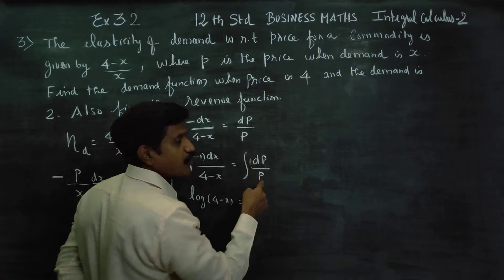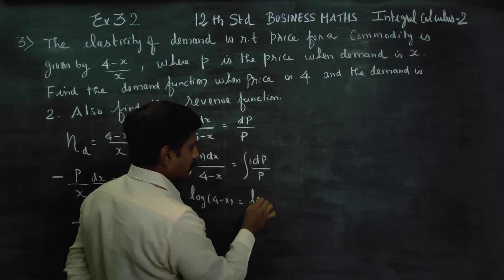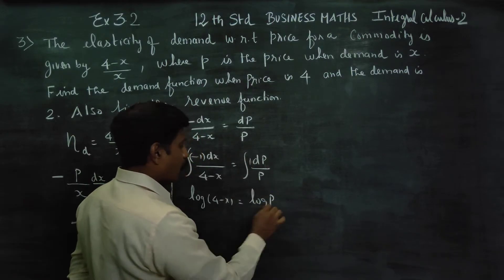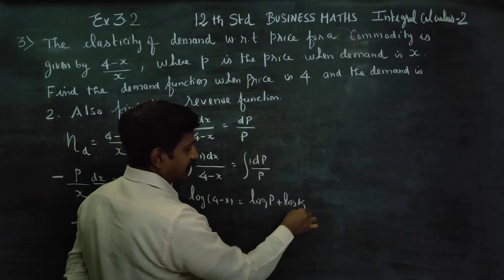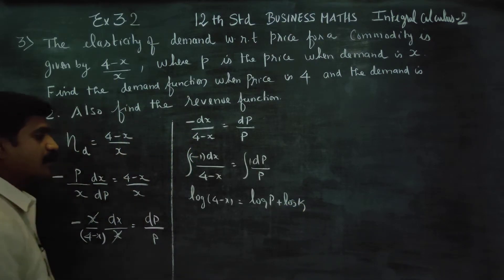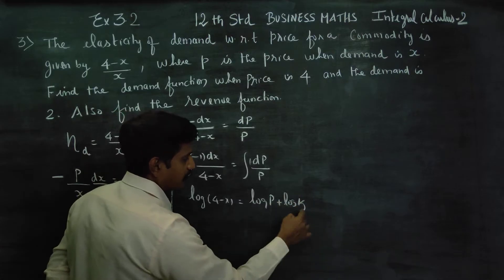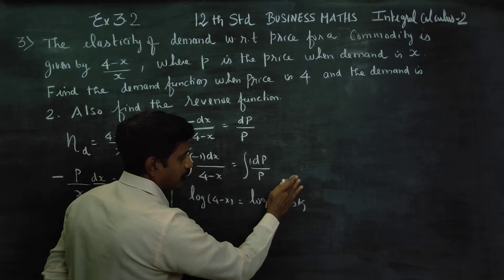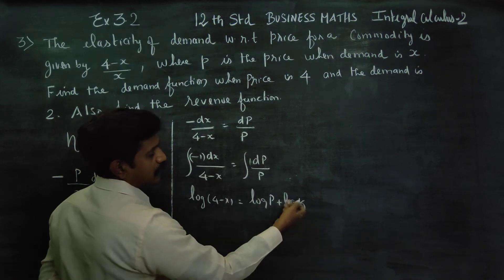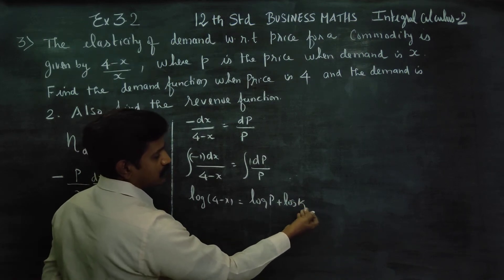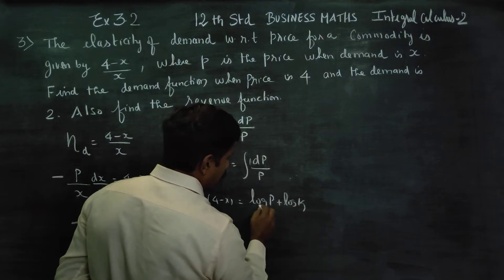The log of x is equal to 1 by x; this is the integration of 1 by p, which gives log p. Log p will be a logarithm. I am going to write plus k — the constant of integration. The logarithm of a constant is a constant; we simplify using log k.